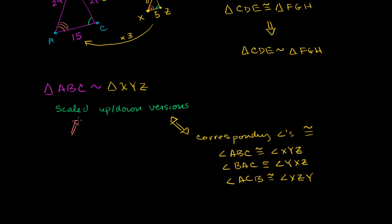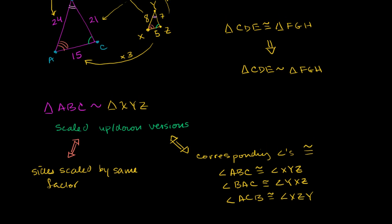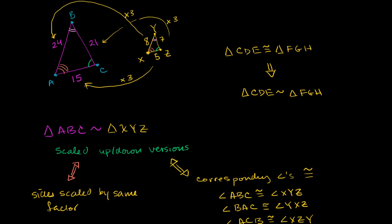The third way to think about similarity is that the sides are all scaled up versions of each other — scaled by the same factor. In this example the scaling factor was 3, but it doesn't have to be 3; it just has to be the same scaling factor for every side. If we scaled one side by 3 and another by 2, we would not have similar triangles. But if we scaled all sides by 7, that's still similar, as long as every side is scaled by the exact same factor.